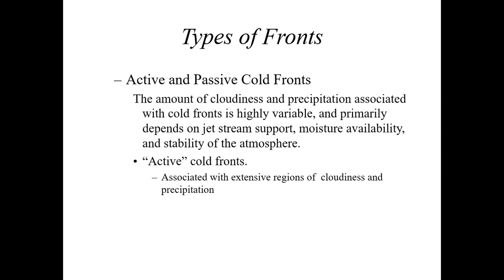I'm going to start by talking about active versus passive cold fronts. With cold fronts we have two types: active and passive. The amount of cloudiness and precipitation associated with cold fronts is highly variable and primarily depends on the jet stream as well as moisture availability, and the stability of the atmosphere. The type of precipitation you get is dependent on atmospheric stability — for example, if we have an unstable atmosphere, we would expect cold air aloft over a warmer heated surface.